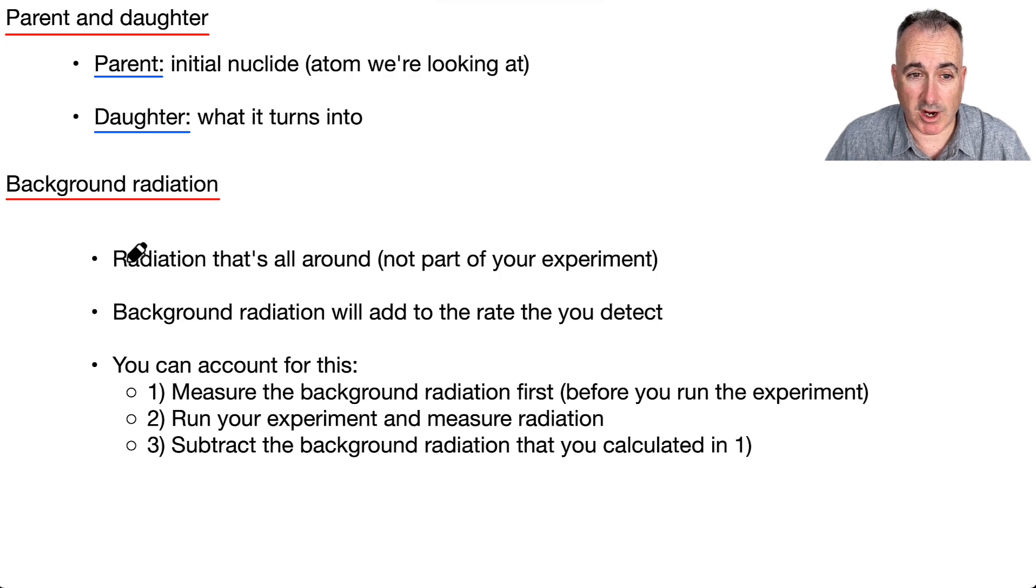If you're trying to do some kind of experiment, there's going to be extra gamma or beta or alpha that you're going to be detecting kind of by accident. So how do you get rid of it? Step one, before you start your experiment, just start measuring the background radiation so you know what your rate is, like how many decays per second on average. Then you run your experiment and measure whatever it is you're measuring. And when you're done, you just subtract that background amount. That's how we deal with background radiation.